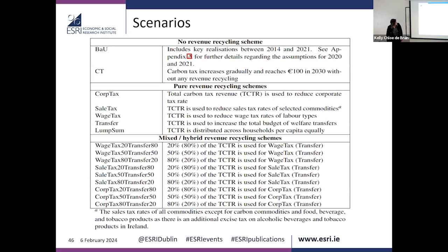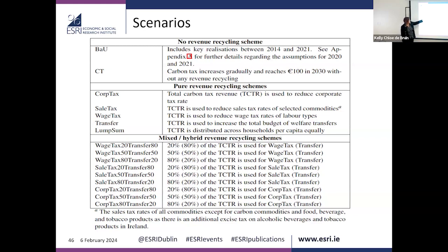These are the scenarios we use. We have a business-as-usual scenario through 2021, and a carbon tax scenario implementing the trajectory up to 100 euro in 2030. Then revenue recycling schemes: one reducing corporate tax, one reducing sales tax, one reducing wage tax, and two increasing transfers to households. Finally, hybrid scenarios combine these approaches — splitting carbon tax revenues between tax reductions and household transfers in various proportions.